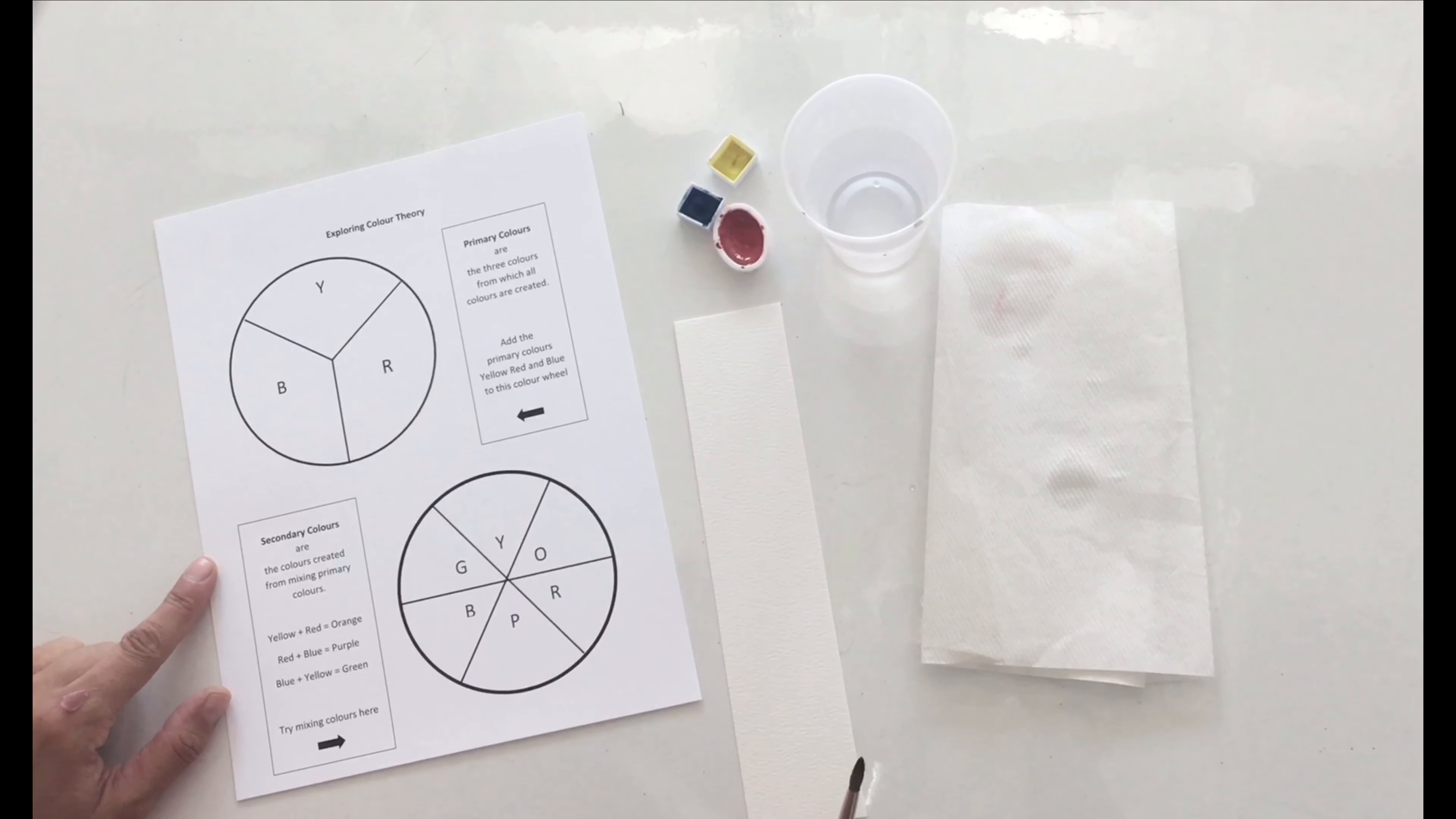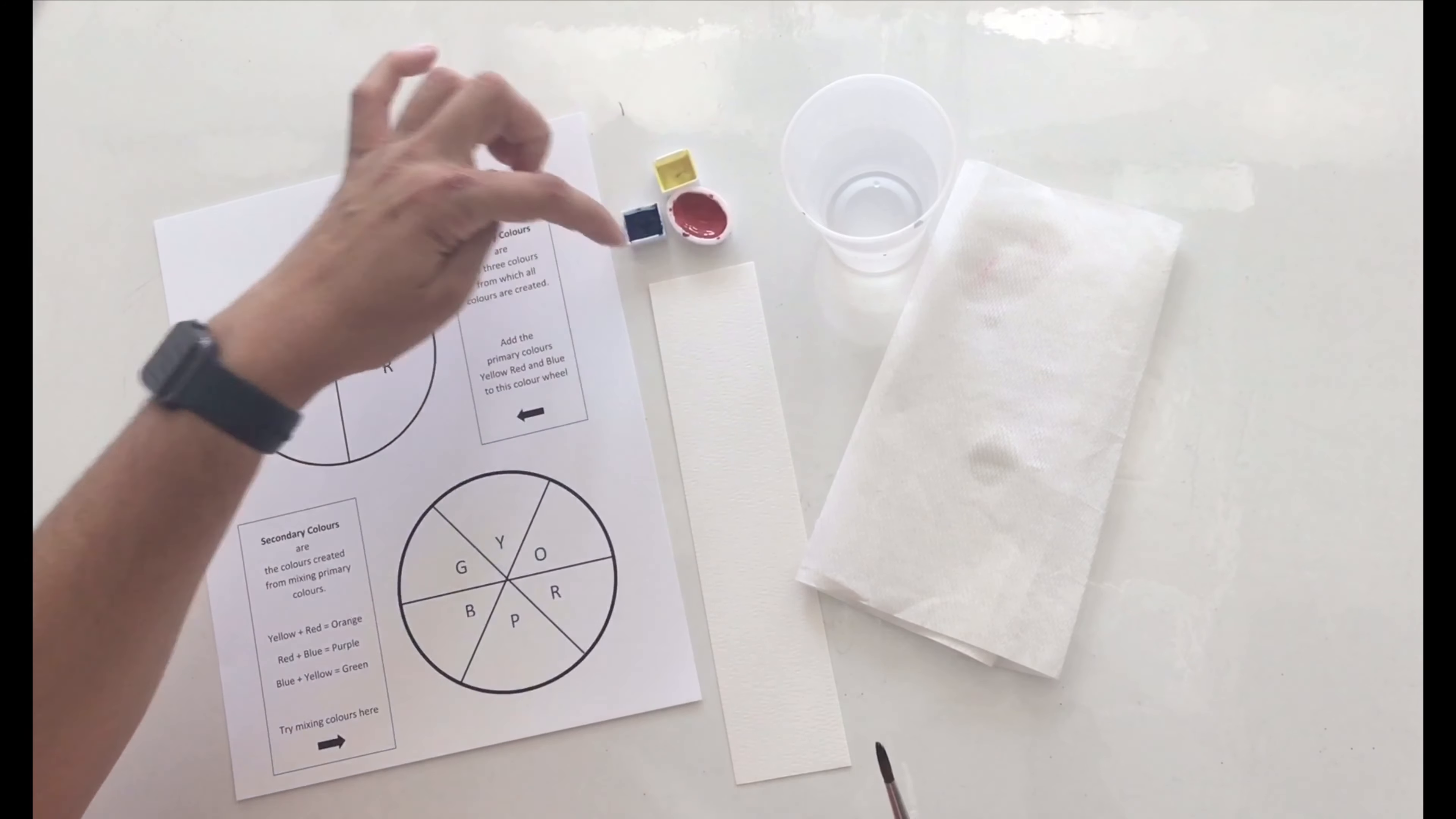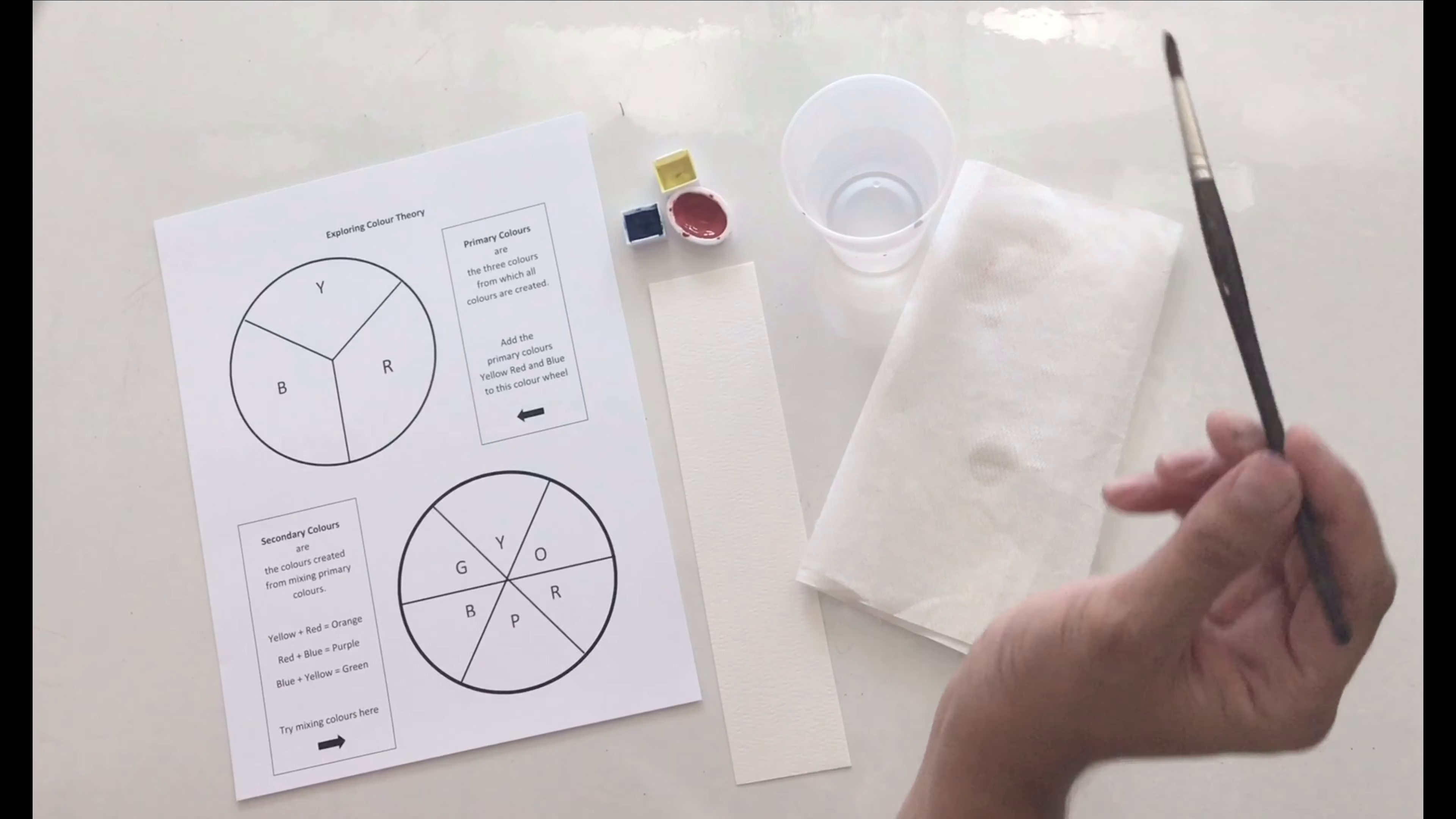So we're going to grab our paintbrush, we've got a cup of water, it's handy to have some paper towel and a little test strip, and of course your paints. We've got yellow, red, and blue - those are our primary colors, and you'll see what they are also on the secondary color wheel. So let's get started.